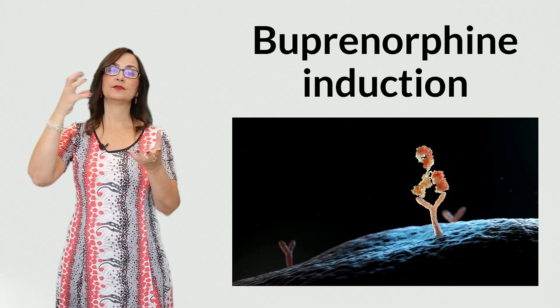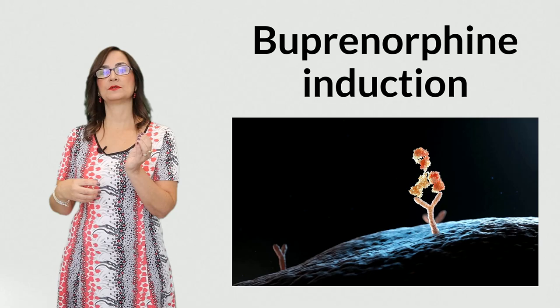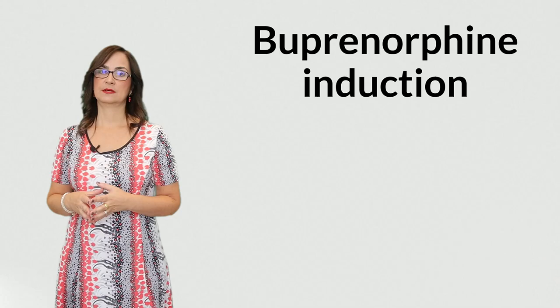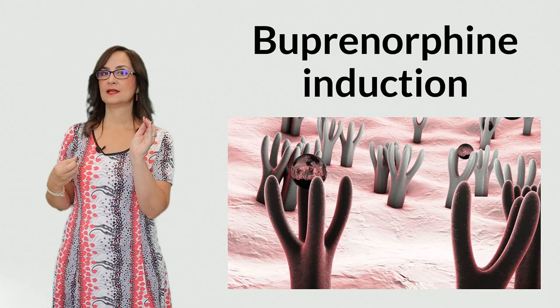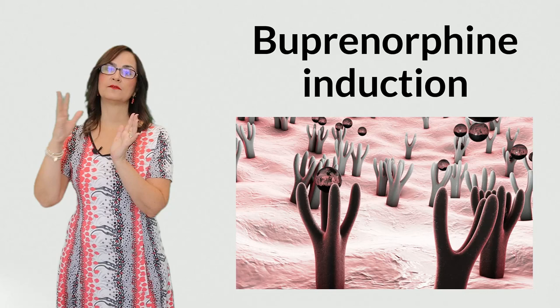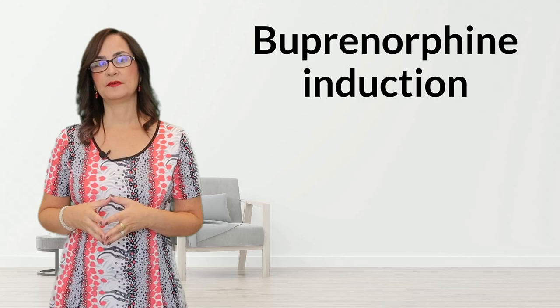It stays there for 24 to 36 hours. If you take another opioid with buprenorphine, the opioid will not find an empty receptor and will not be able to have the analgesic effect. So if the person is taking another opioid — let's say morphine or oxycodone — we first need to empty those receptors, and that's why we need to ask the person to stop taking all of their opioids before we give them the first dose of buprenorphine.